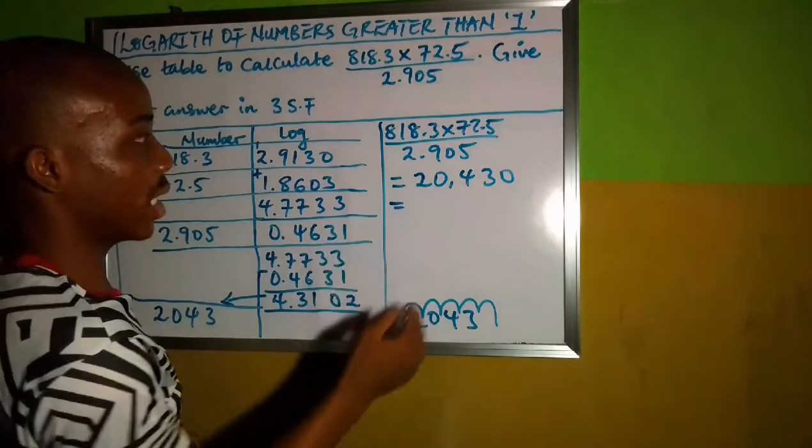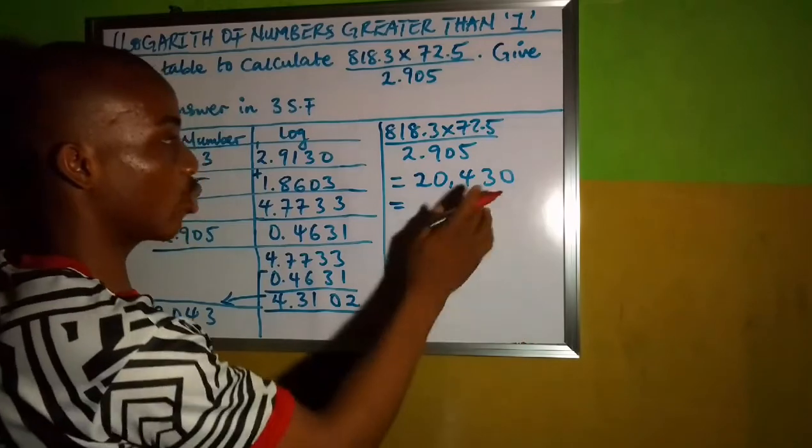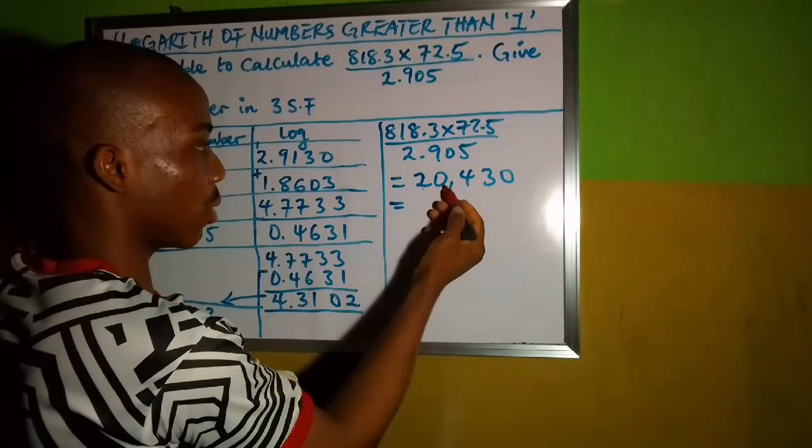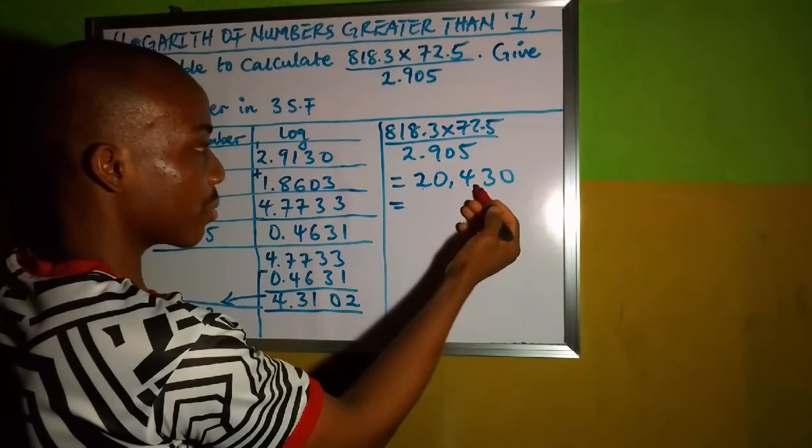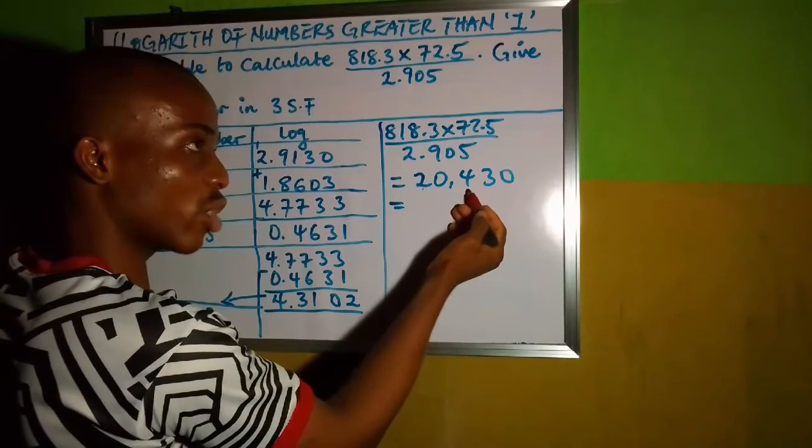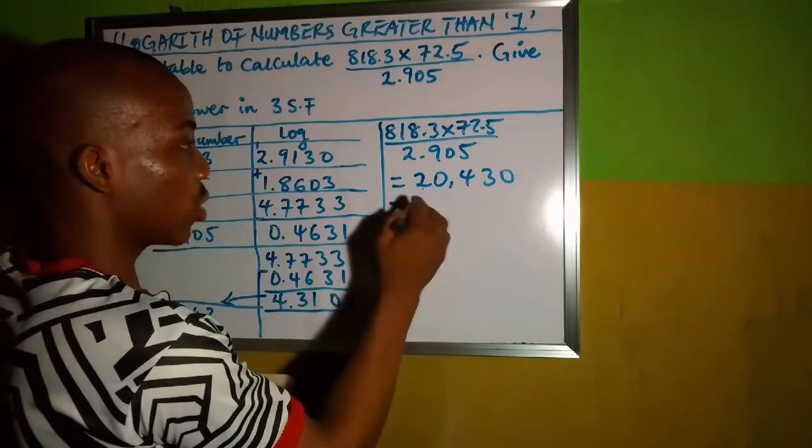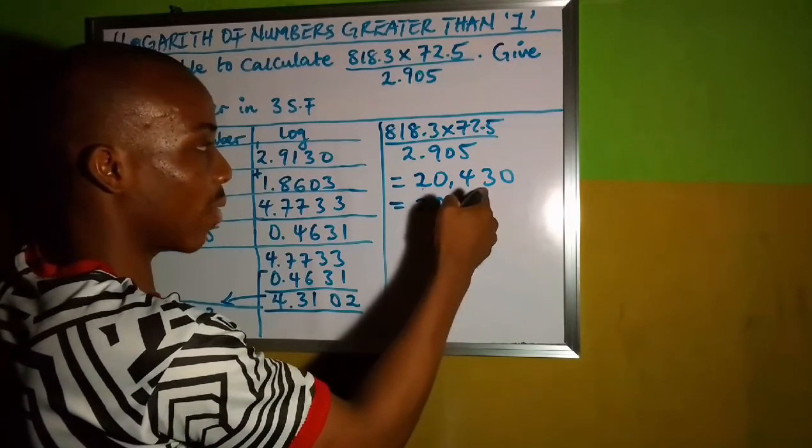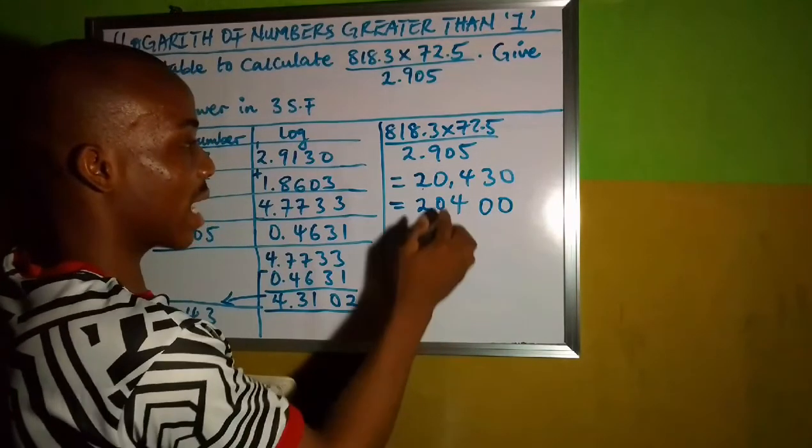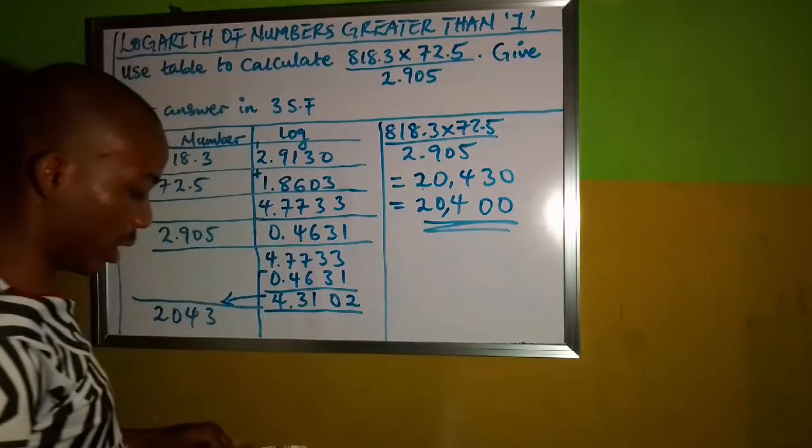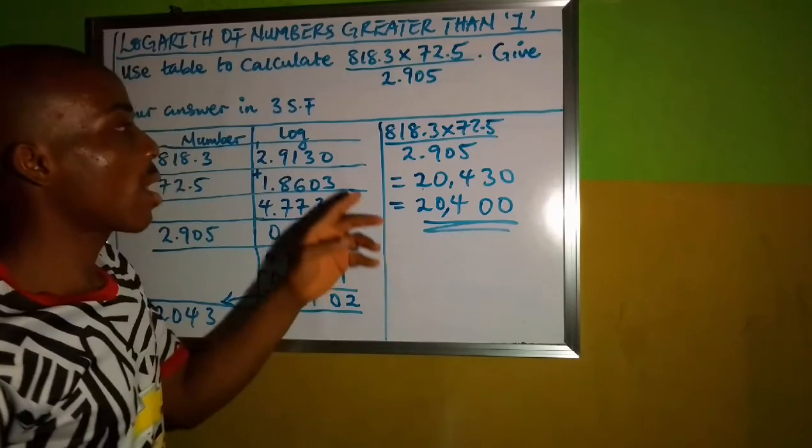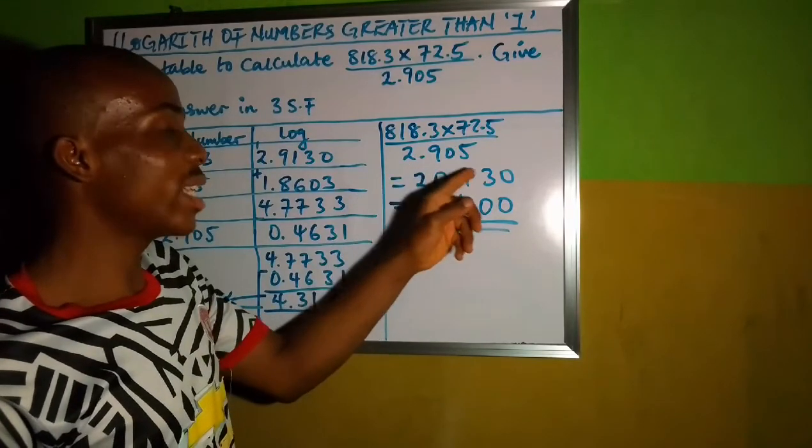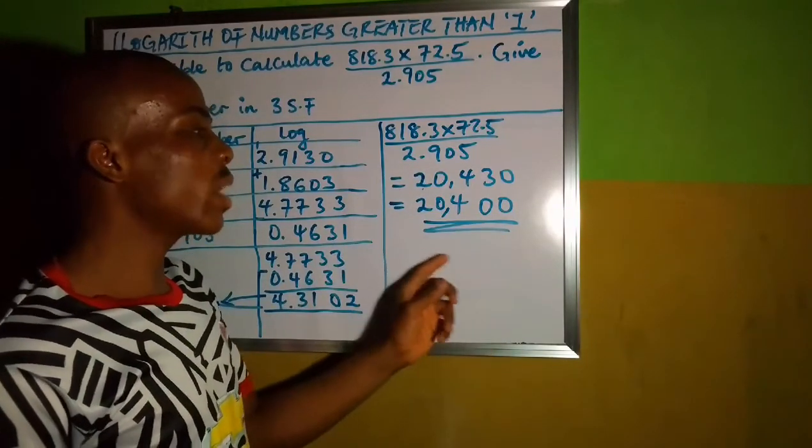But the question says that we should express in 3 significant figures. Remember our lesson on significant figures. This is the first significant figure, second and third. Now let's check these 3. Can it give out to these 4? Of course no. It is a rounding down number. So the 3 significant figures is just 2, 0, 4. So the answer to this is 20,400. The final answer to 818.3 times 72.5 divided by 2.905 to 3 significant figures is 20,400.